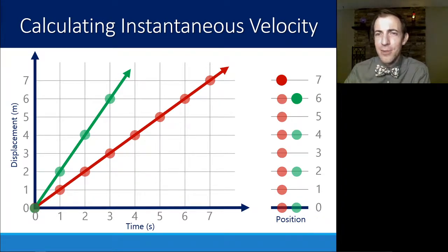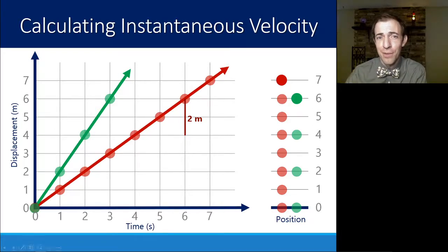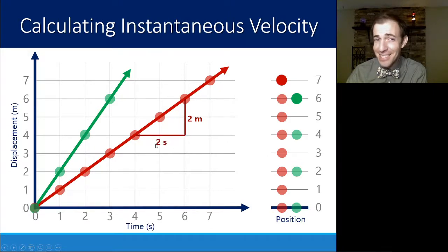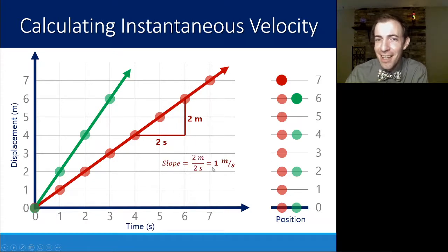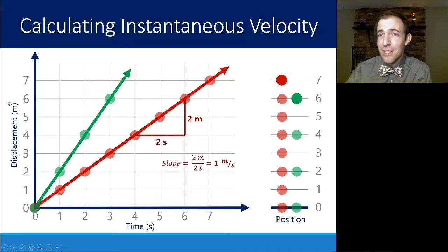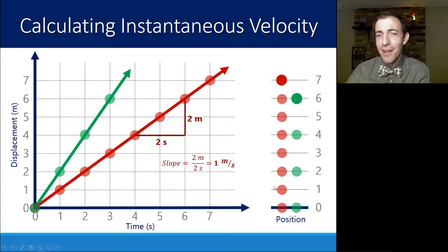We're not going to need calculus — we're just going to look at a straight line slope. To find the slope of this red line, slope is rise over run: the y values divided by the x values between two points. If we measure a rise of two meters at the same time as a run of two seconds, slope is two meters divided by two seconds, which gives us one meter per second. That corresponds to this dot diagram where the ball traveled one meter every second.